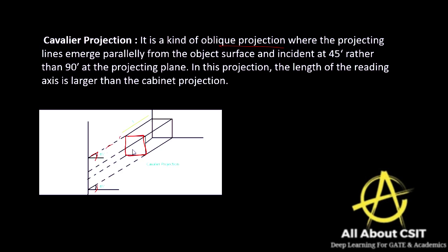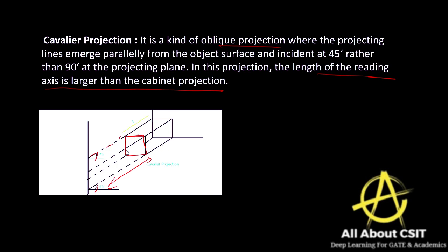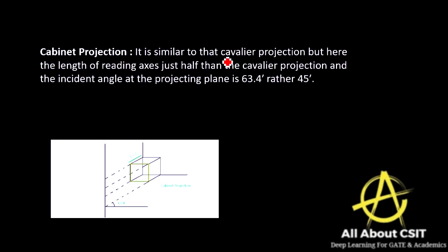In cavalier projection the length of the receding axis is larger. In cabinet projection it is similar to cavalier, but the length of the receding axis is just half of the cavalier projection.